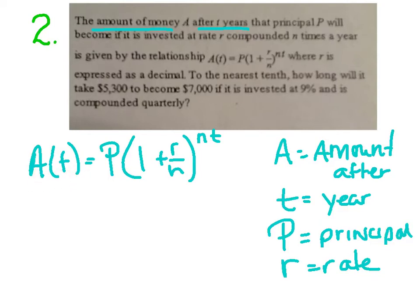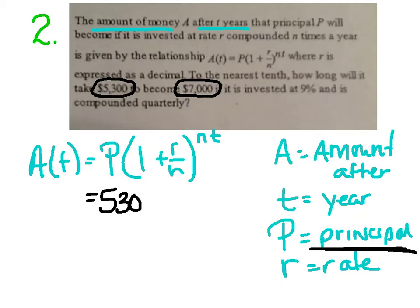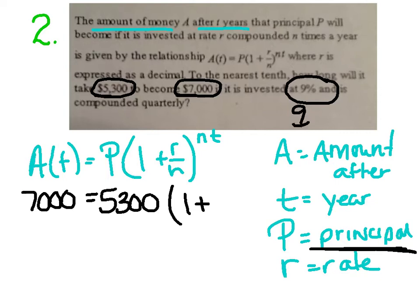So, to the nearest tenth, how long will it take this amount of money to become $7,000? Okay. Remember, P, the principal, is what you started with. So, I started with $5,300. I want it to end up at $7,000. I'm always using 1 plus. It says 9%. Remember, that's a percentage. Move your decimal two places. So, that's .09 divided by N is the number of times it's compounded.